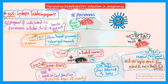To summarize parvovirus: start with IgG. If IgG is negative, check IgM. If IgM is negative, that's good. If IgM is positive, the pregnant woman is infected — check by ultrasound to see if the child has developed the complication. If hydrops fetalis has developed, the next best step and investigation of choice is umbilical cord sampling. That covers parvovirus infection in pregnancy.